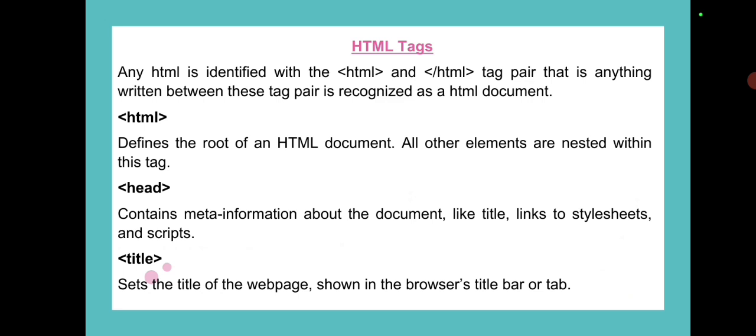HTML is identified with the HTML opening and closing tag pair — anything written between these tags is recognized as an HTML document. The HTML tag defines the root of an HTML document, and all other elements are nested within this tag. The head tag contains meta information about the document, like the title and links.